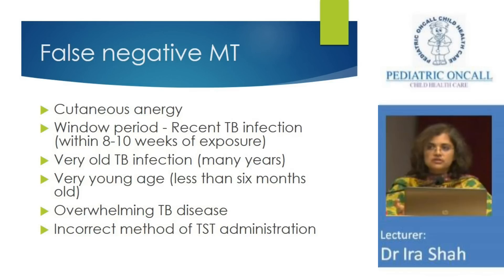You can have false negative MANTU. If you develop the disease and did a MANTU very early during the disease — like primary progressive TB — you could get a negative MANTU. Very old TB, MANTU can become negative. Very young age, less than 6 months, MANTU may be negative. Very disseminated TB — Miliary TB — MANTU may also be negative. Or you may not have given MANTU properly.